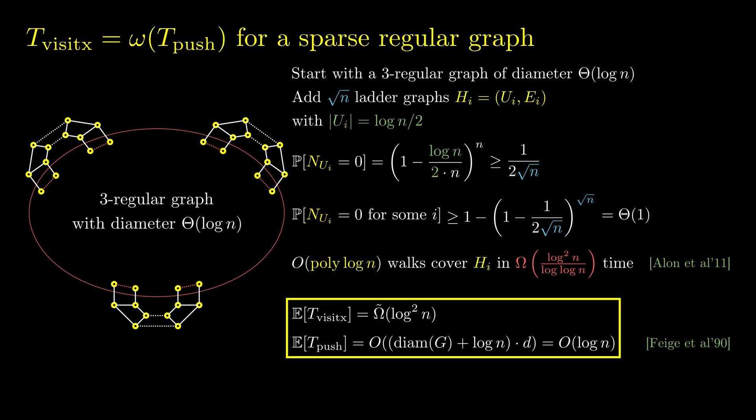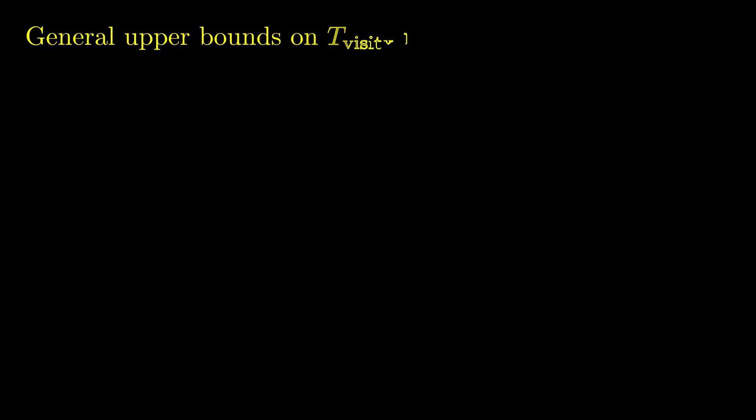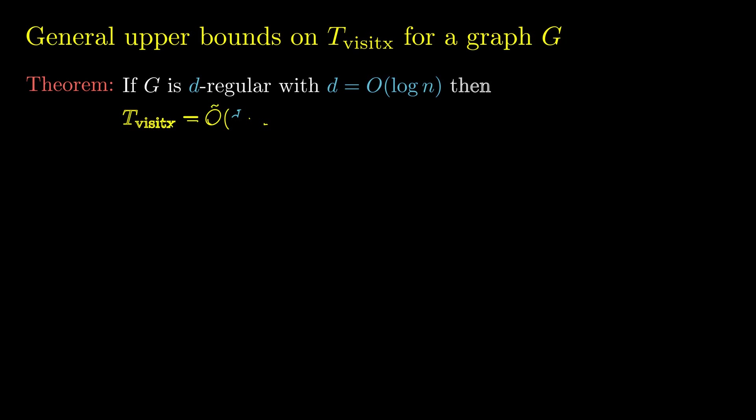I should mention that it is not clear whether such a result holds for graphs of larger diameter — the discrepancy may be of an additive squared logarithmic factor. Next, I will present upper bounds on the broadcast time of visit exchange for some general classes of sparse graphs, grid graphs, and balanced trees. The first bound is for sparse d-regular graphs: the broadcast time is at most d times the diameter of the graph, with an additive term of log n divided by d.